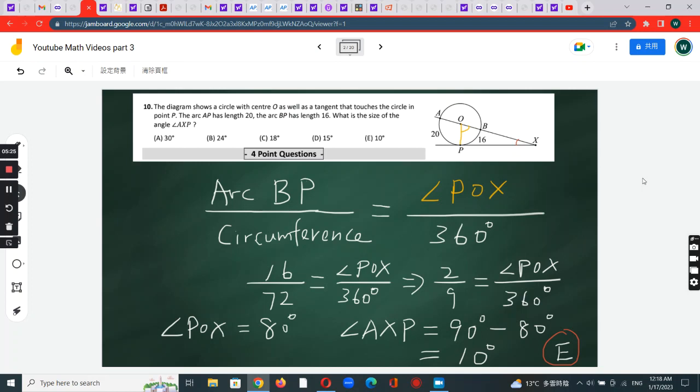So 2 over 9 equals angle POX divided by 360 degrees. Therefore, angle POX is 80 degrees. All you need to do is multiply both sides by 360.